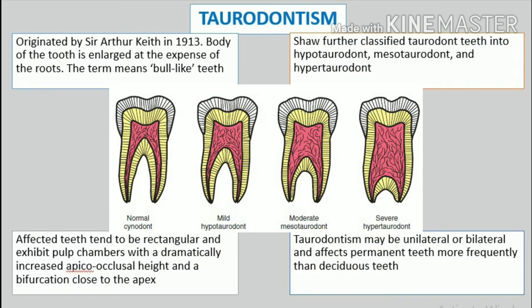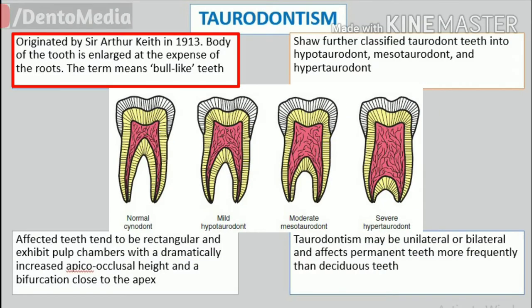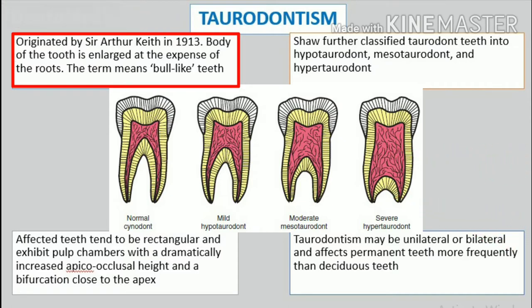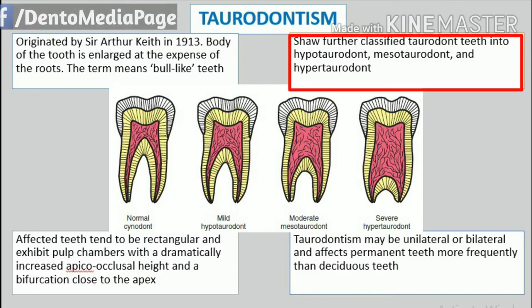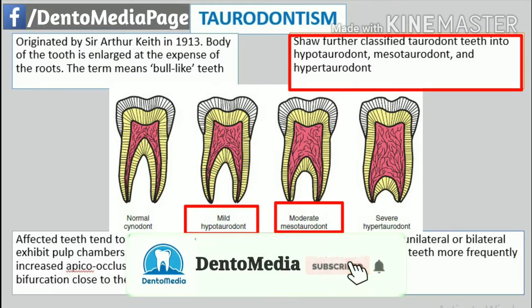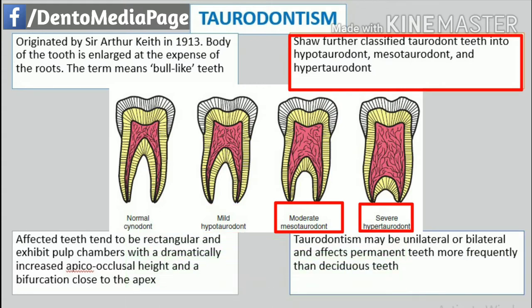Taurodontism. The term taurodontism was originated by Sir Arthur Keith in 1913 to describe a peculiar dental anomaly in which the body of the tooth is enlarged at the expense of the roots. The term means bull-like teeth. Shaw further classified taurodont teeth into hypotaurodont, mesotaurodont, and hypertaurodont forms.